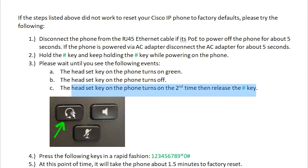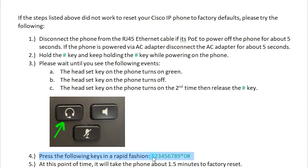At that point we want to release the hash key, and in a rapid fashion type in 123456789*0#. The phone will then initiate the factory reset, and it'll take about 1.5 minutes for the factory reset to complete.